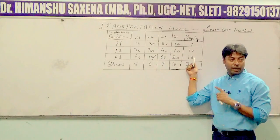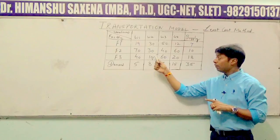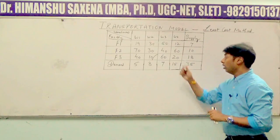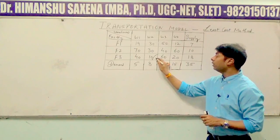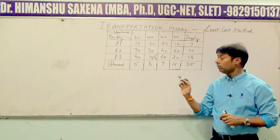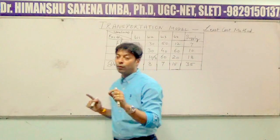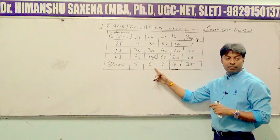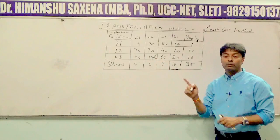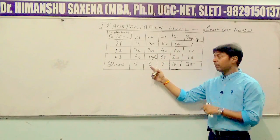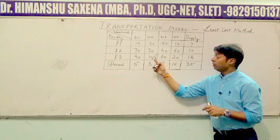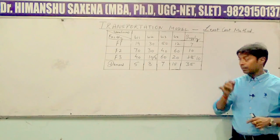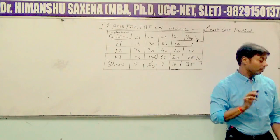You have to compare the supply in front of it and the demand below it, then select the minimum of those two values. Between the supply of 18 and the demand of 8, the minimum value is 8. So 8 is allocated to that cell. This 8 is then subtracted from both supply and demand: 18 minus 8 gives 10, and 8 minus 8 gives 0.